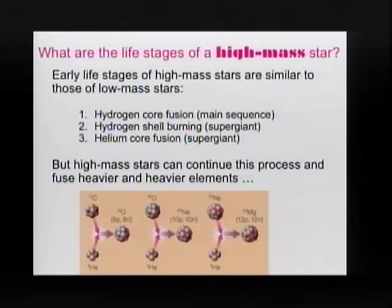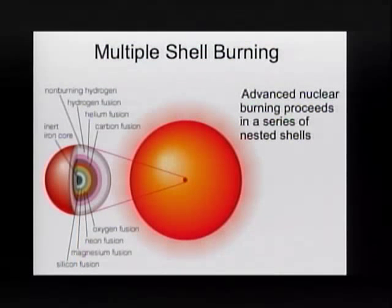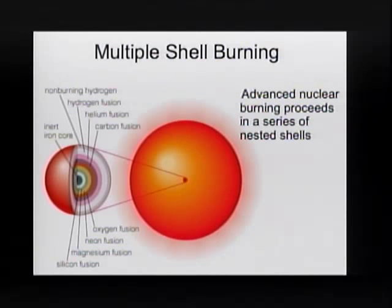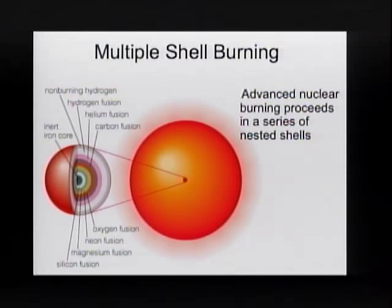High mass stars continue this process until eventually what we have is a star that looks more like an onion than a star. It has shells and shells fusing different things. At the very core of this star, what you have is iron. Iron won't be able to fuse into anything. And around it you have silicon, and around that you have magnesium, and around that you have neon and oxygen and carbon and helium and hydrogen.